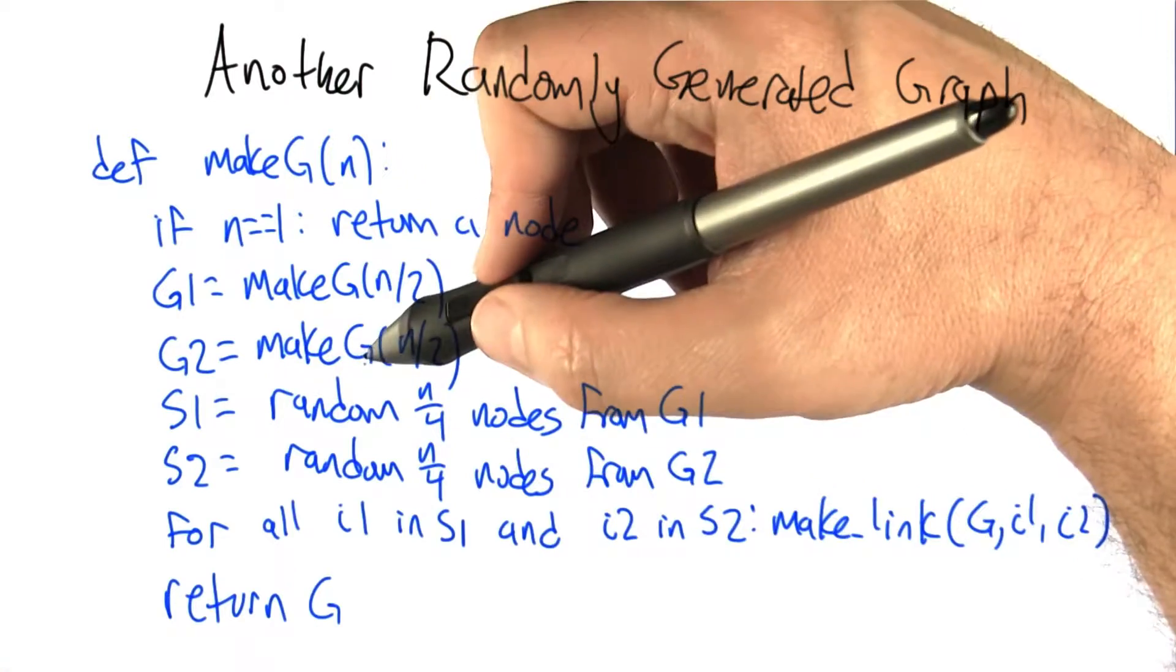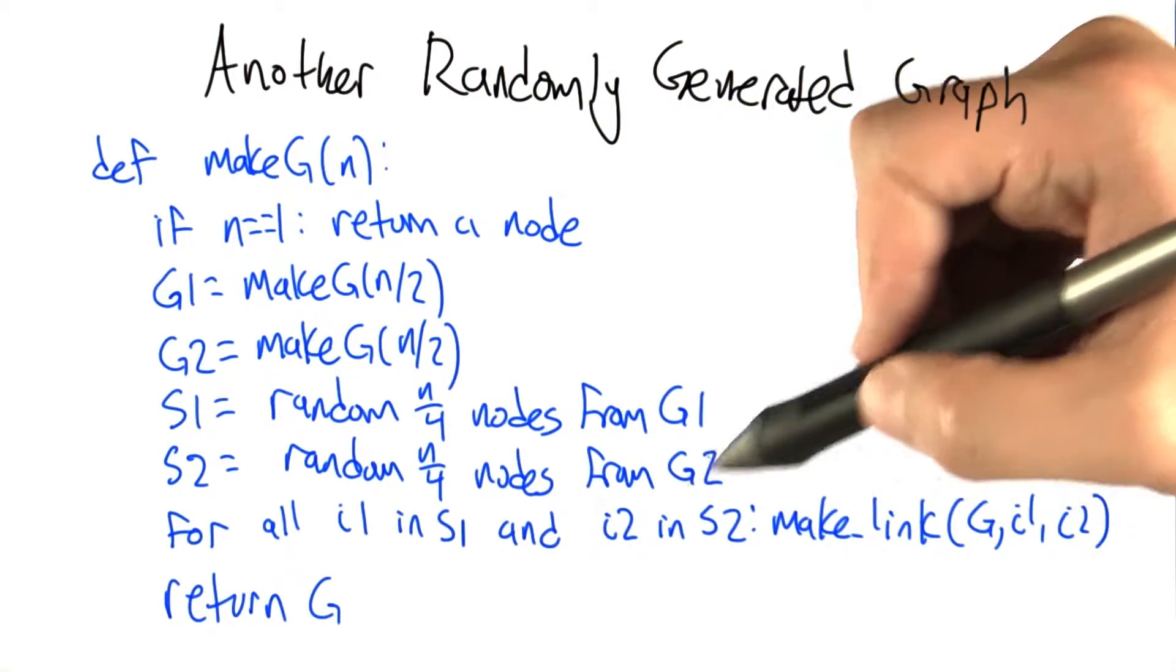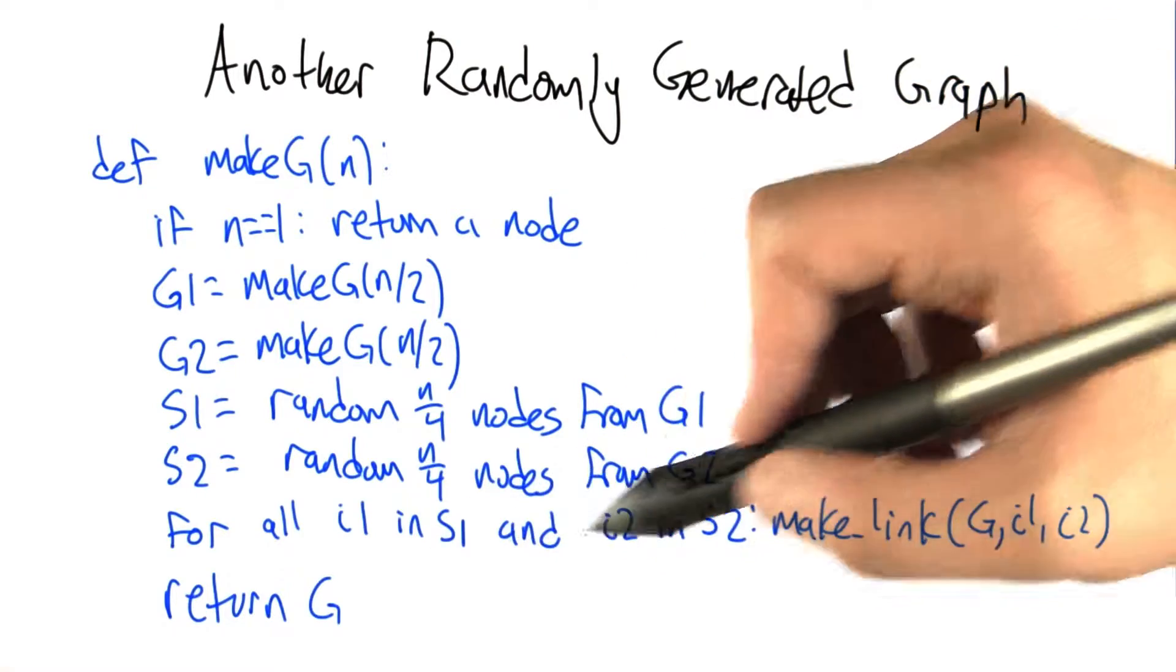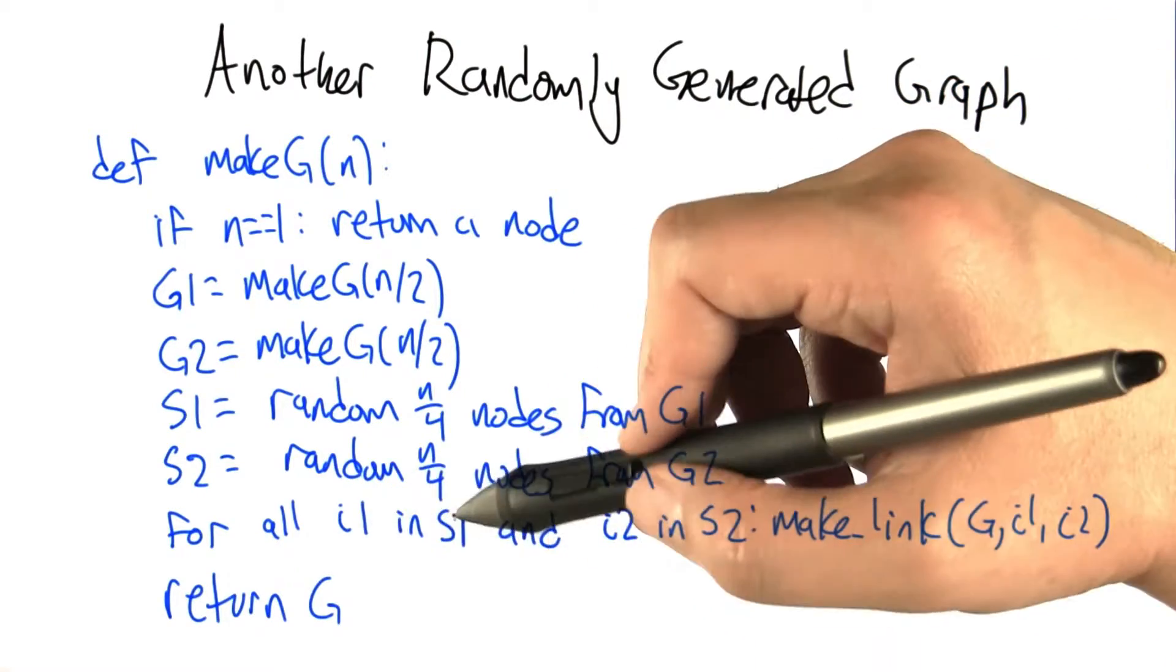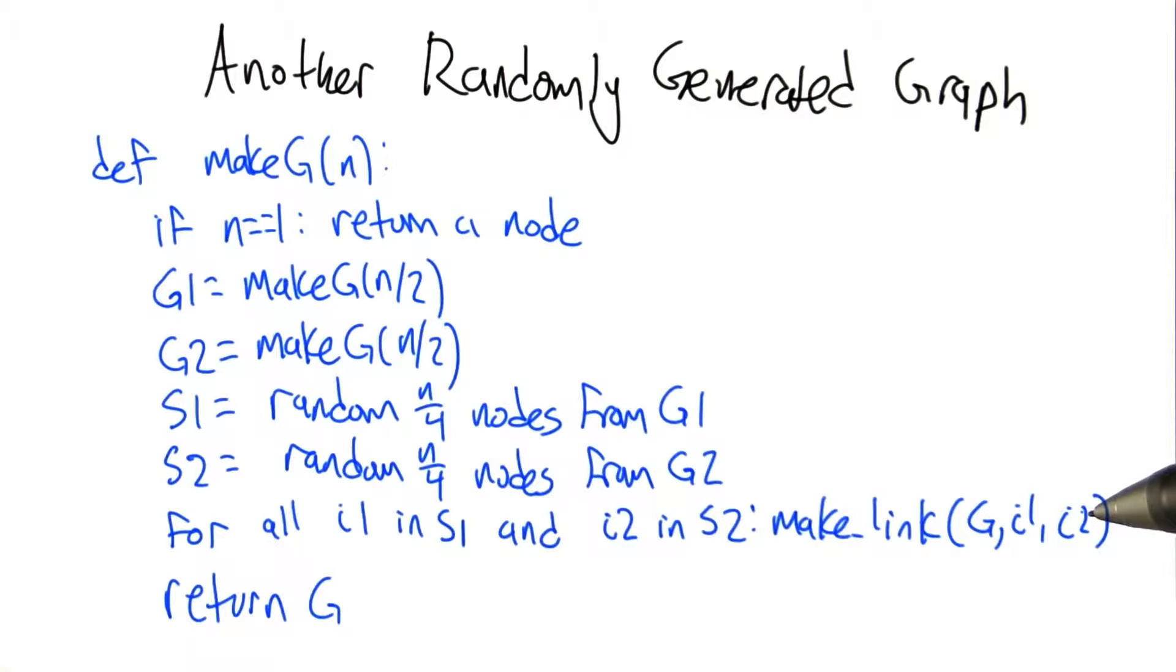Otherwise, we recursively generate the two subgraphs. But now what we're going to do is choose half of the nodes from G1 and half of the nodes that are in G2 and connect all pairs. So for all i1 in S1 and all i2 in S2, we're going to link i1 and i2 together.